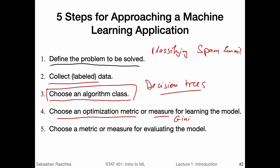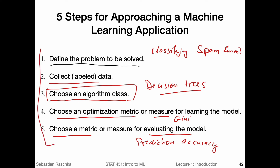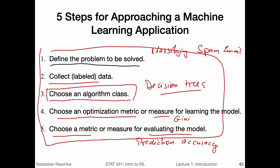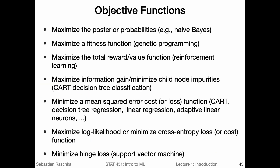After we define what we want to optimize for training the model, we have to choose a metric to evaluate the model. That could be something like prediction accuracy on the test set — how many predictions the model gets correct in the test set — for example, it could be one metric. It's usually good to define all of this upfront so that we have an action plan for developing our machine learning application.